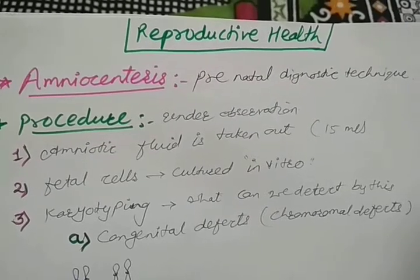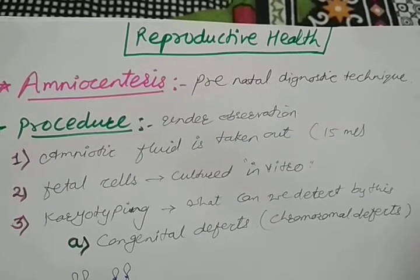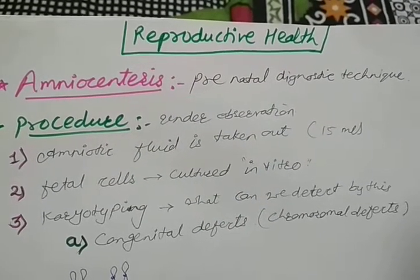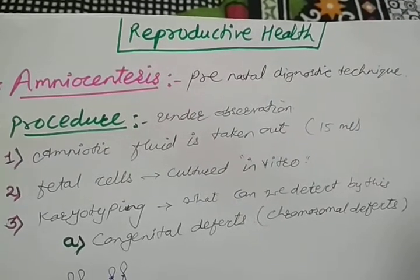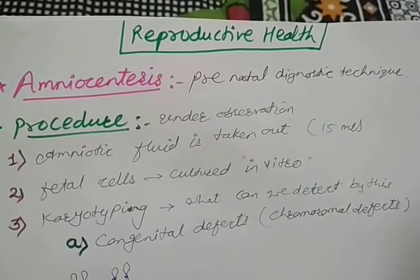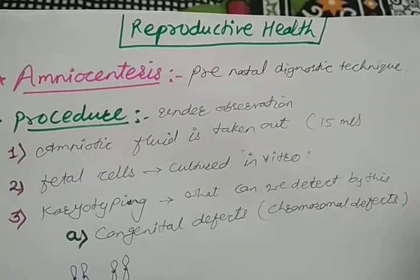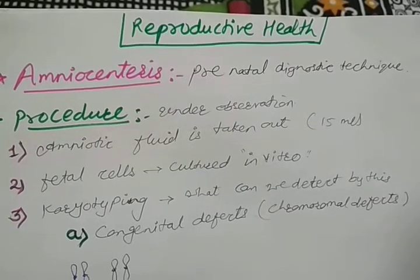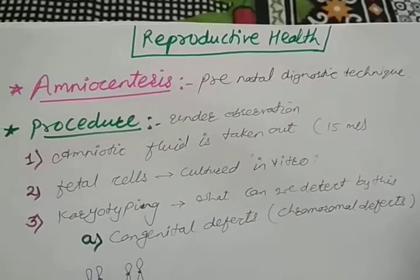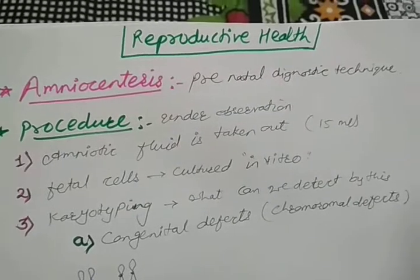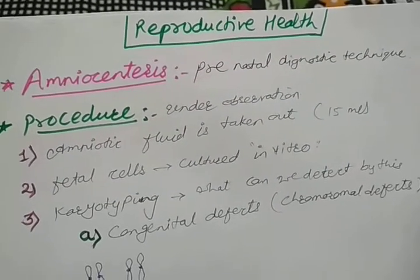Welcome students. Today we will see the remaining part of the reproductive health chapter from Class 12. In the previous video we have seen about different methods like chemical methods for contraceptives. In this video we will see another point related with reproductive health, that is amniocentesis.